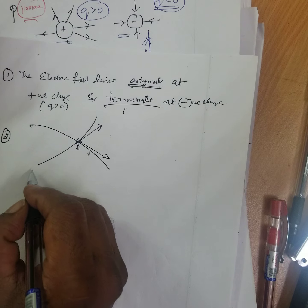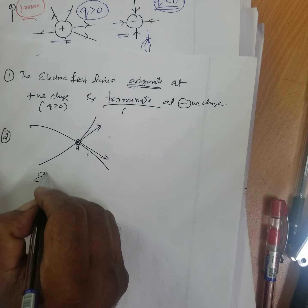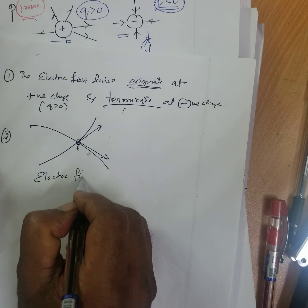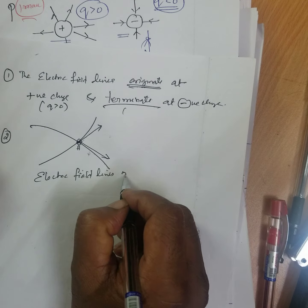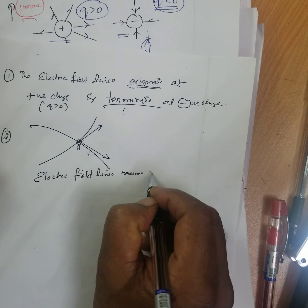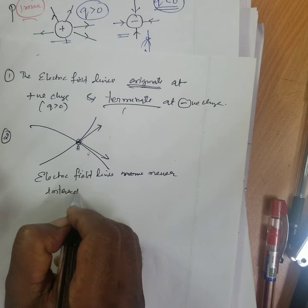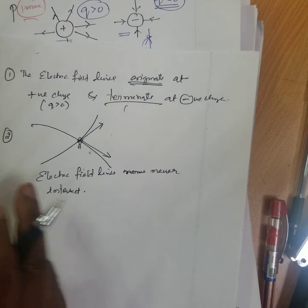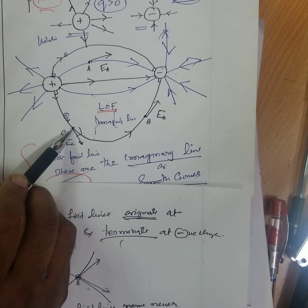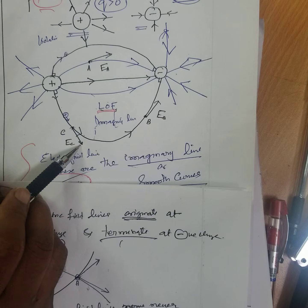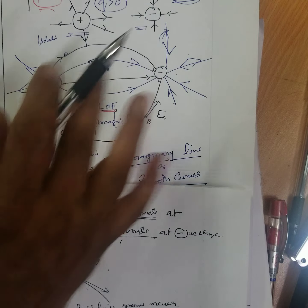Electric field lines never intersect because at each point the direction of the electric field is unique — it is the direction of the tangent to the field line at that point.